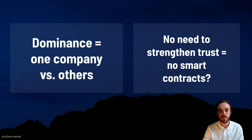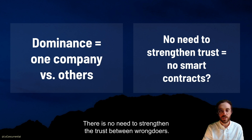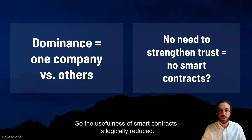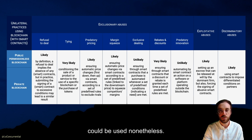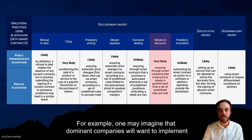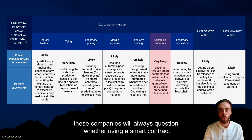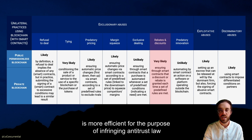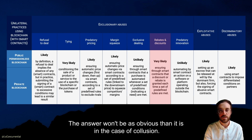When it comes to abuses of dominance, smart contracts seem to be less relevant. Related practices are about one competitor abusing its market power. There is no need to strengthen the trust between wrongdoers, so the usefulness of smart contracts is logically reduced. Here, I have listed some practices for which smart contracts could be used nonetheless. For example, one may imagine that dominant companies will want to implement rebate strategies using smart contracts. But at the end of the day, these companies will always question whether using a smart contract is more efficient for the purpose of infringing antitrust law than using a regular agreement. The answer won't be as obvious as it is in the case of collusion.